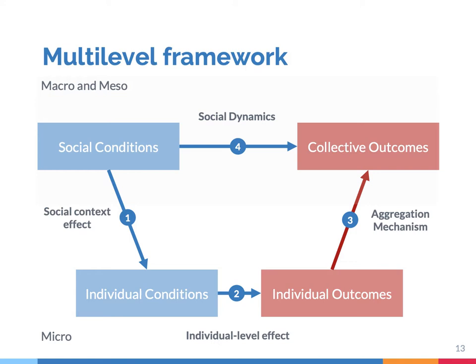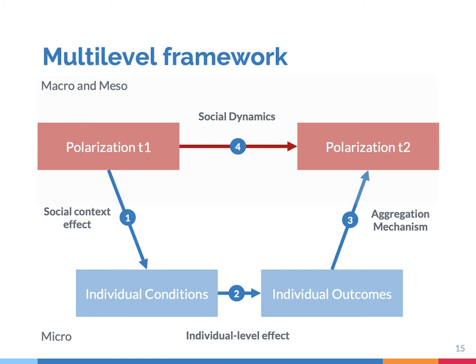Social dynamics can refer to two different things. First, they can be about the relationship between two different phenomena, such as that protestantism is related to capitalism. Second, social dynamics can also be about social trends. In that case, you look at the same kind of variable and study changes over time. For example, you can look at polarization and study how polarization has increased over time.